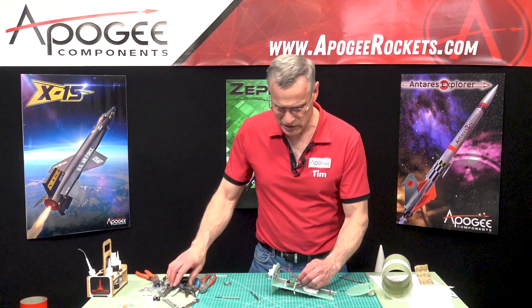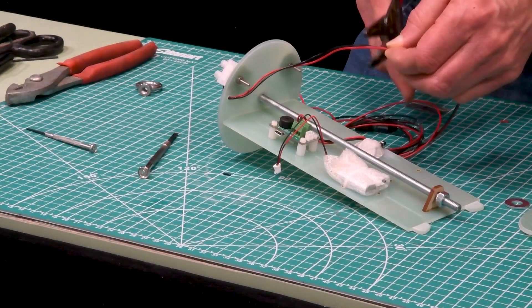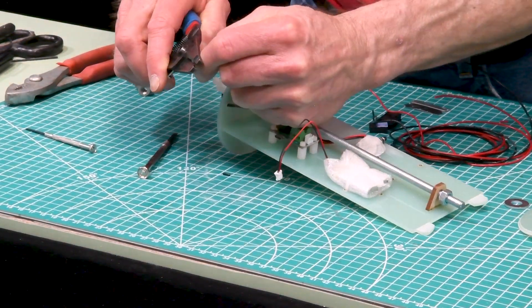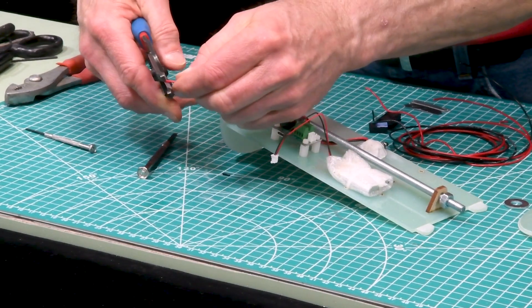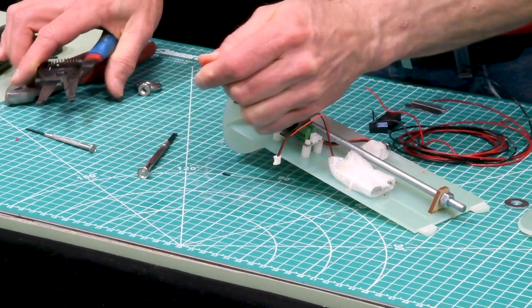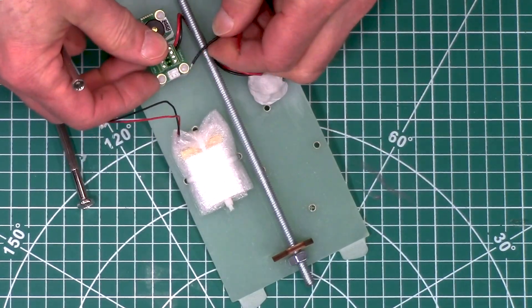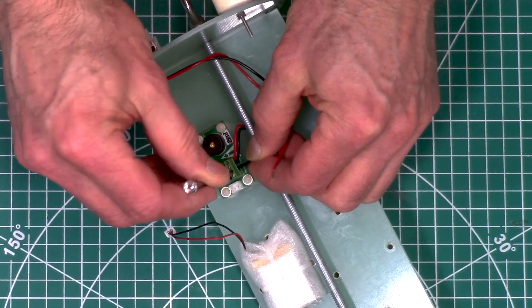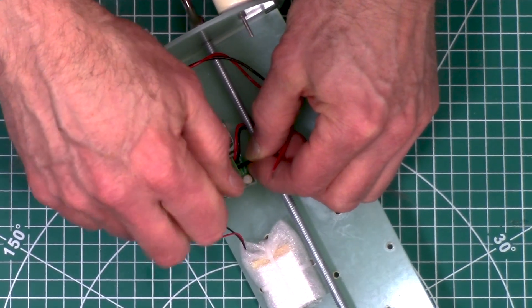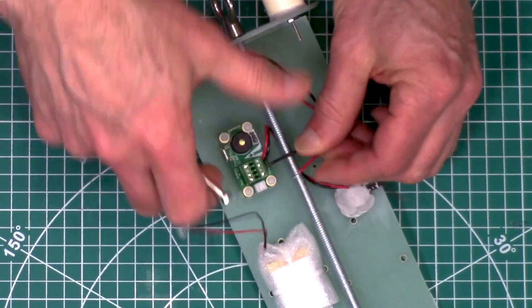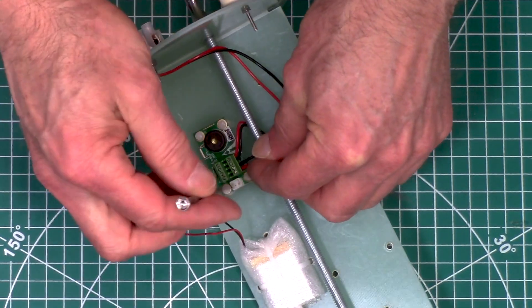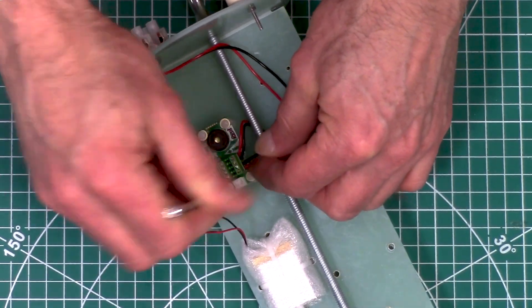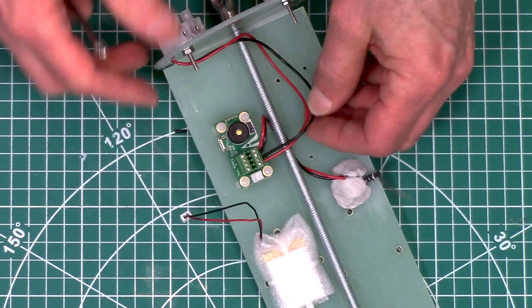I'm going to have a little bit of slack in there and I'll cut these. Now we'll go into my apogee, which is right here. Again, these are not polarity sensitive, so I can go either color into either one.